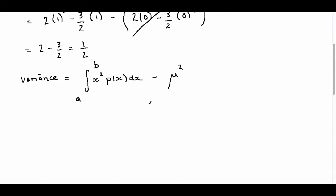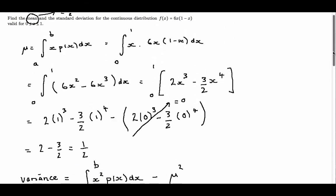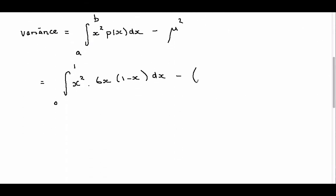So for our example, we're going to have the integral between 0 and 1 of X squared times by 6X, 1 minus X. Take away, now mu was our mean which was a half so it's minus 1 half squared.